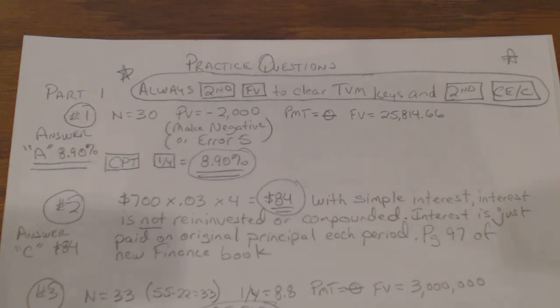If you ever see an error 5, you know that you've probably got to change your present value to a negative number. You can compute the IY in this problem, and it's 8.9%.